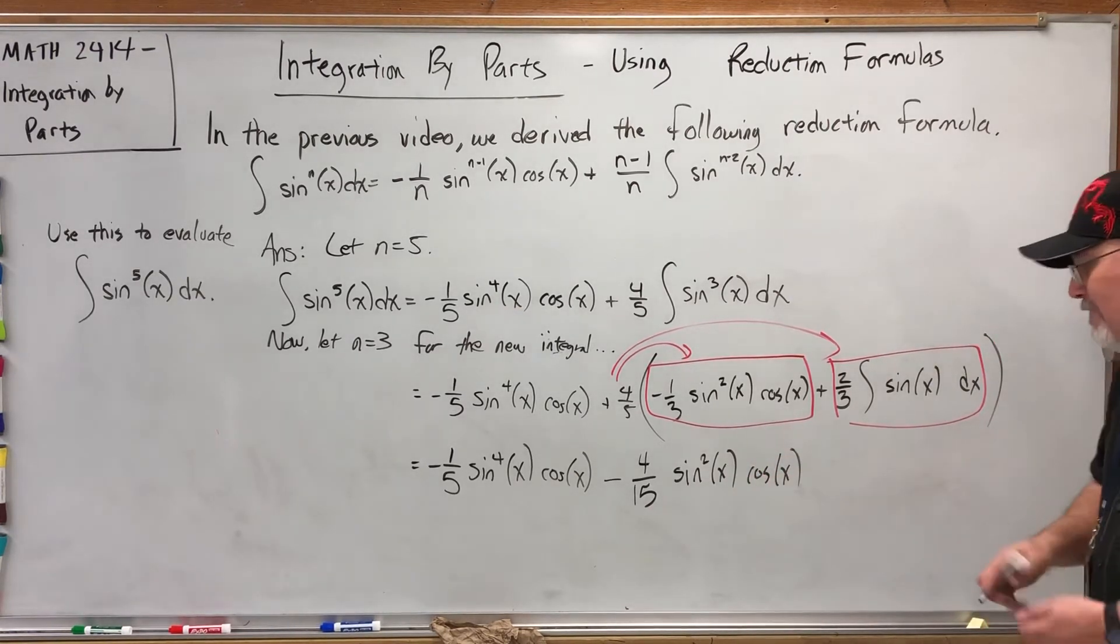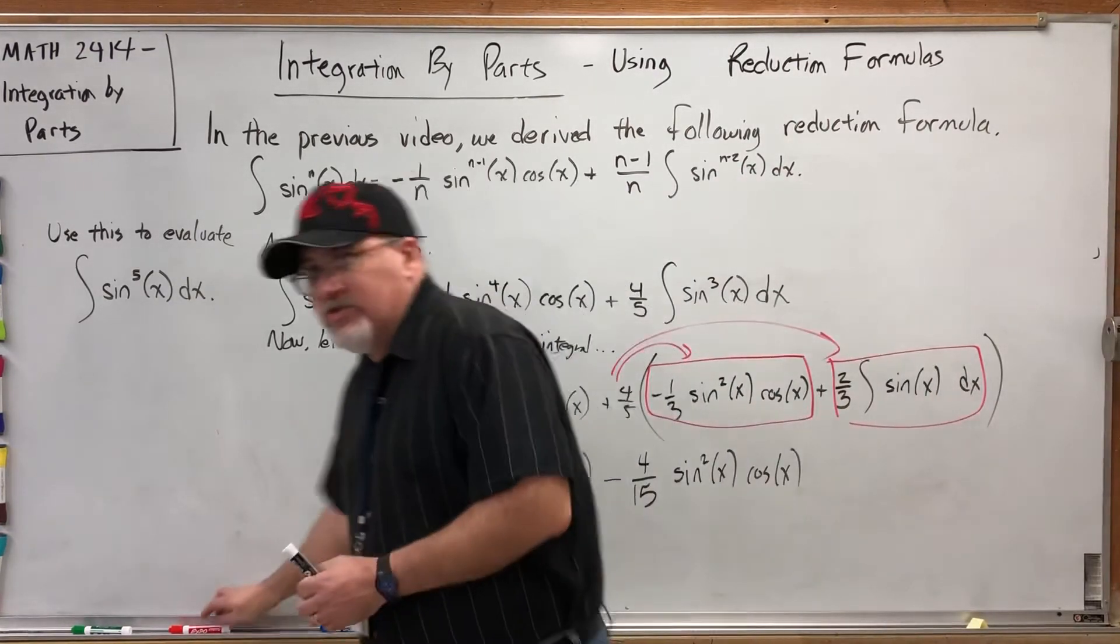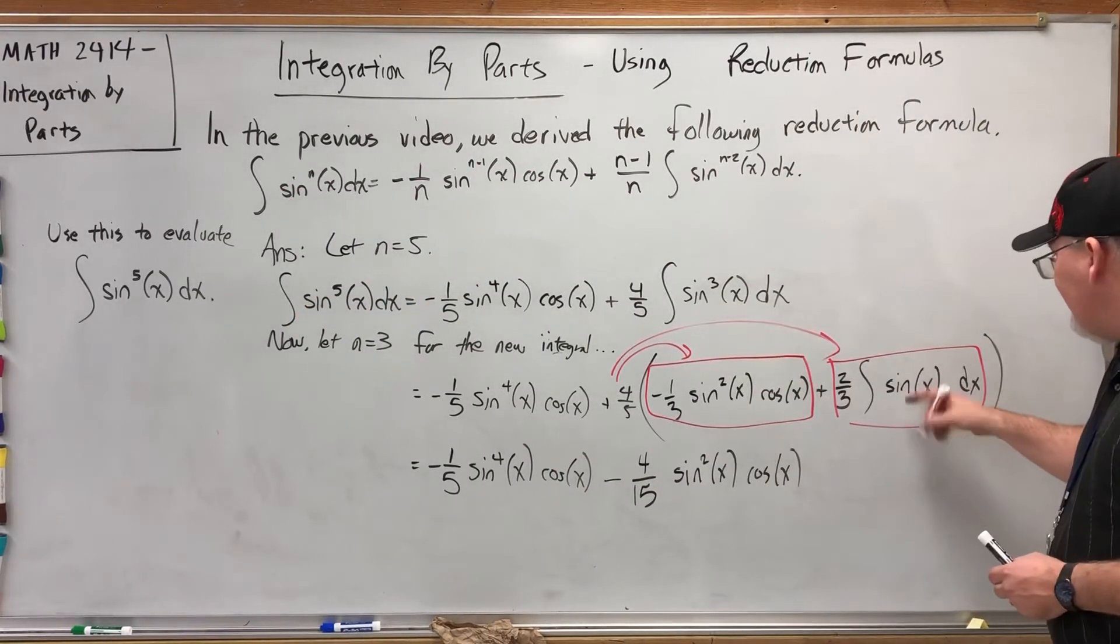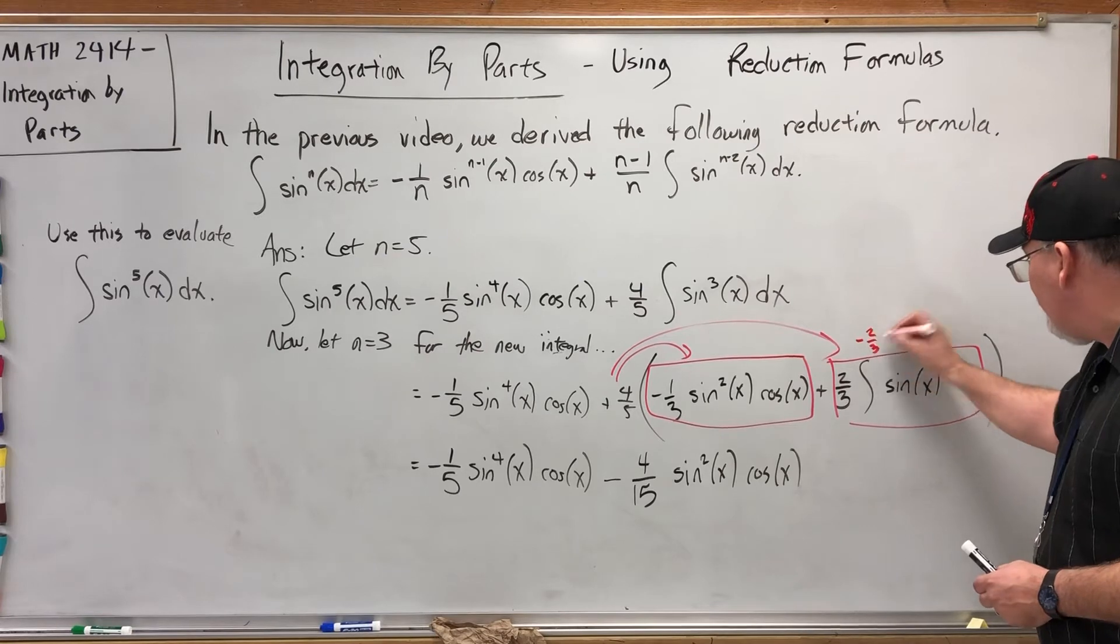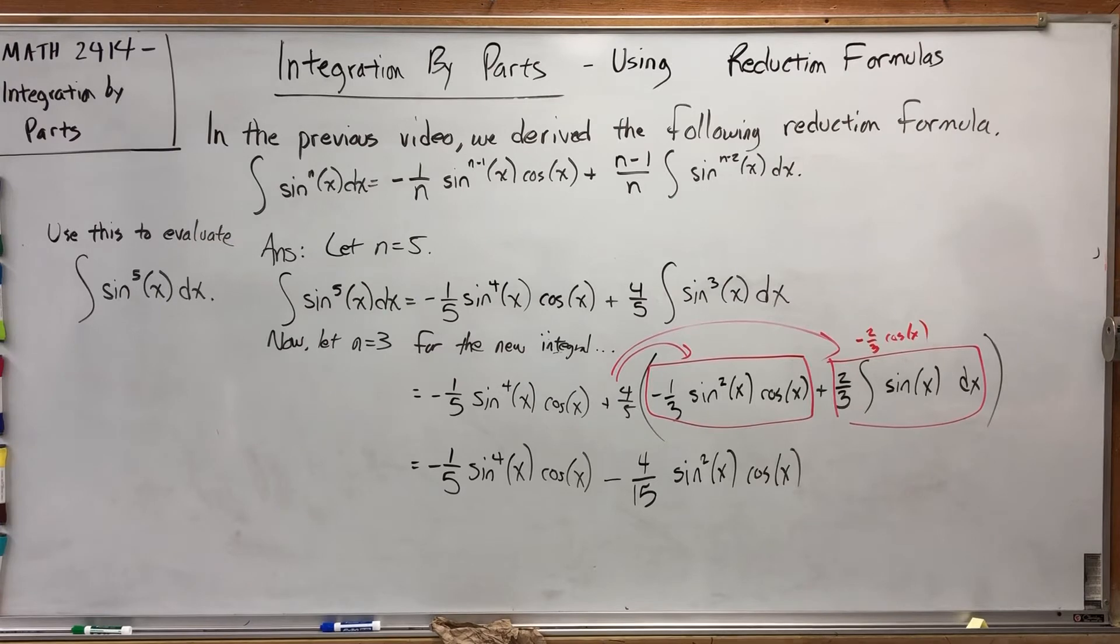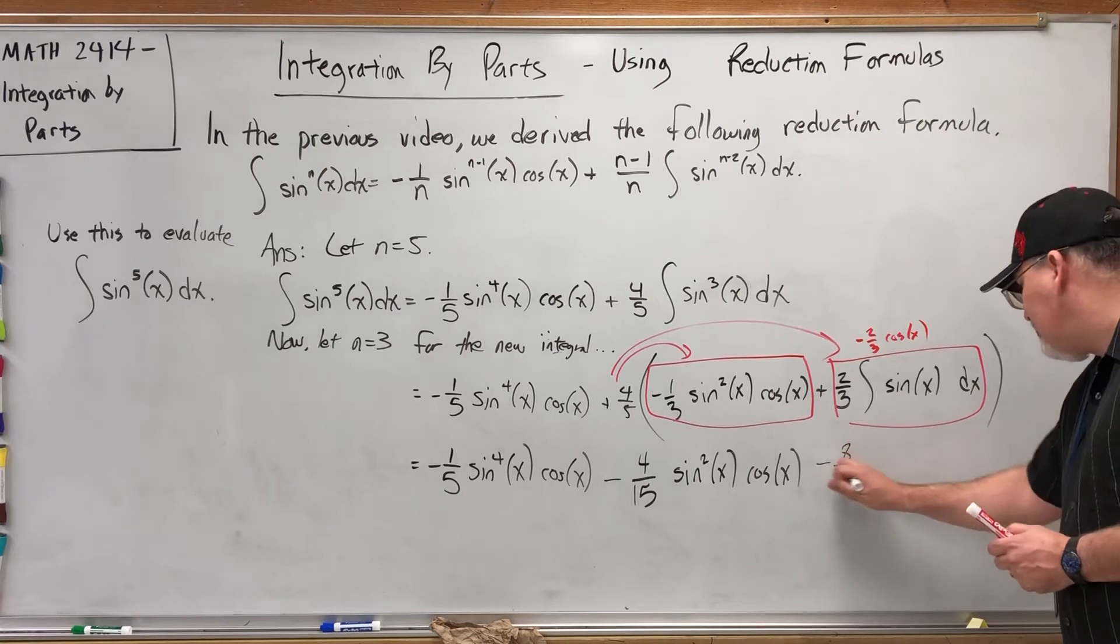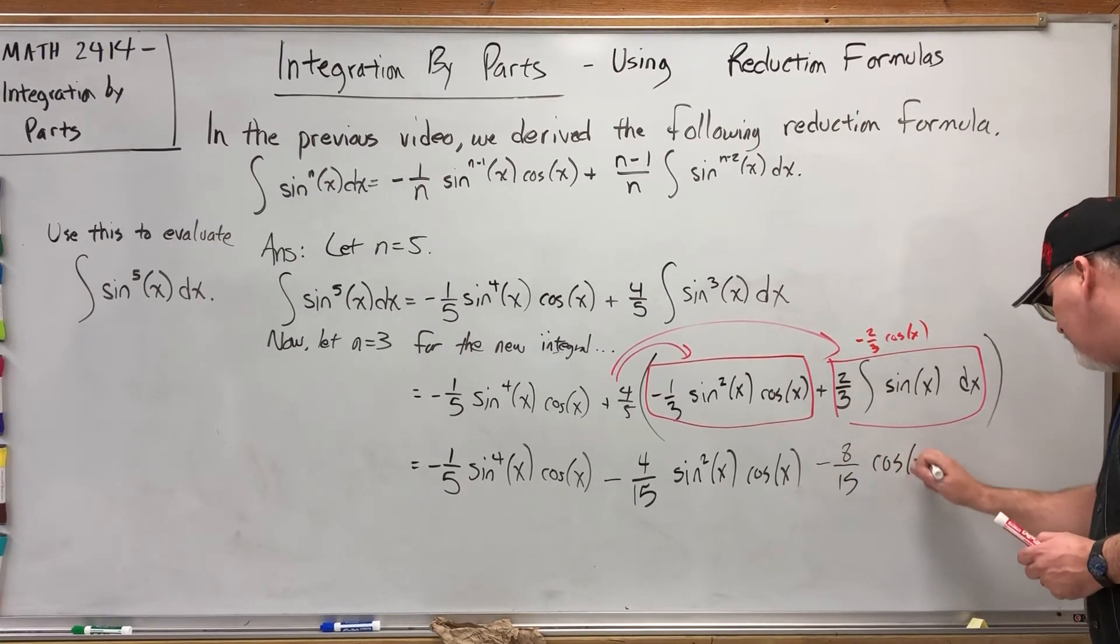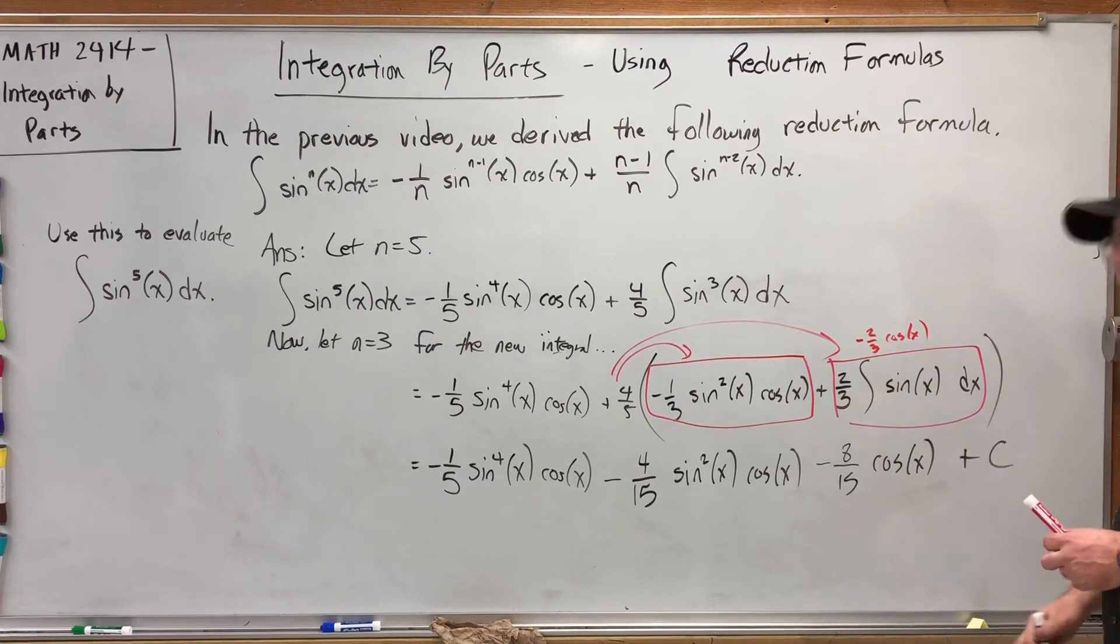And here's where maybe actually integrating this first is going to be beneficial. This will give us integral of sine is negative cosine, so we get negative two-thirds cosine of x upon doing this integration. And so when we distribute the positive four-fifths to that, we'll get negative four-fifths times two-thirds is negative eight-fifteenths. We integrated that to get cosine, and of course plus c.